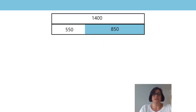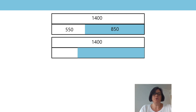The minuend is the total journey from home, 1400, so that's in my top bar. She'd walked 850 metres, which gave us a difference of 550 metres. But when she walked an additional 100 metres, the blue bar in my model representing the subtrahend needs to increase by 100 to become 950 metres. This means that the bar representing the difference needs to decrease by the same amount, which gives us a difference of 450 metres.